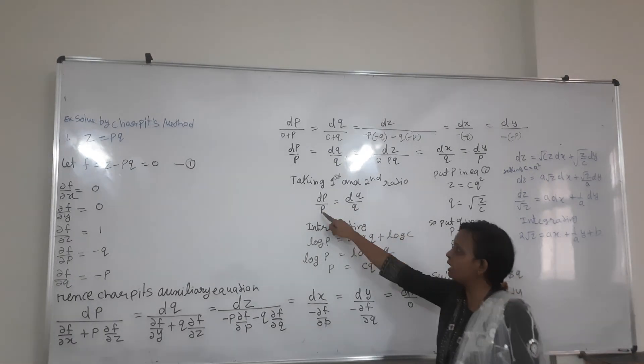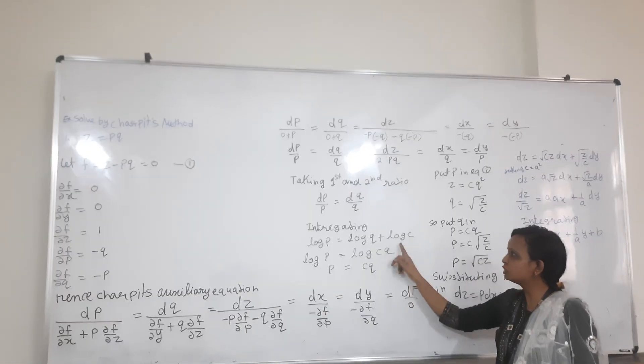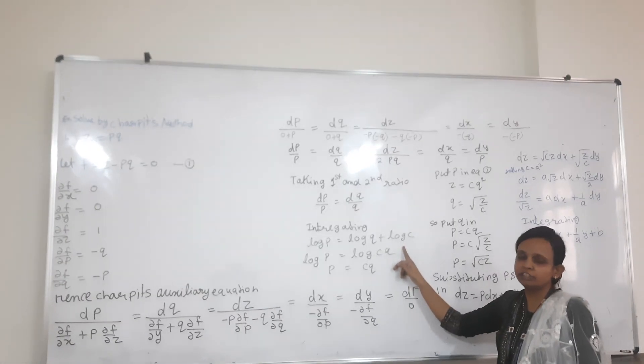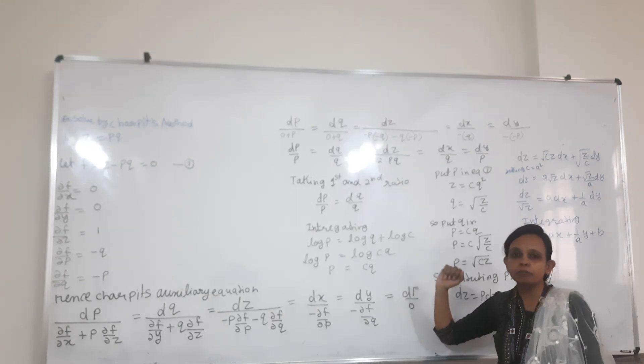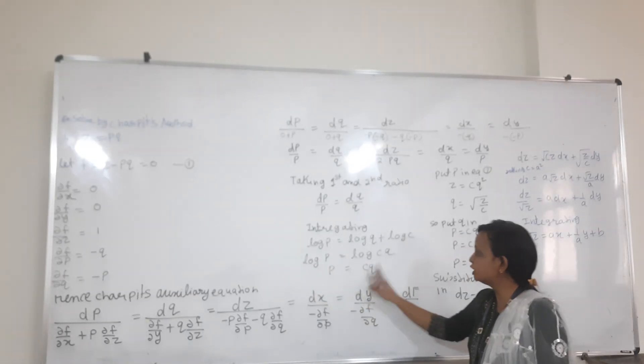We have to apply log P plus log Q. So log P plus log C equals log Q. Using logarithm properties, log P plus log C equals log of CQ, therefore P equals CQ.